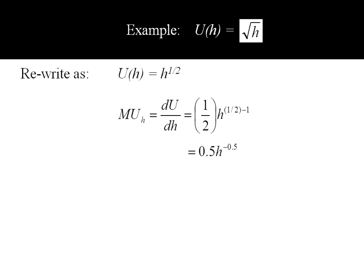If you don't like that negative exponent, you could rewrite it with h in the denominator. So 0.5 divided by h raised to the 0.5. And if you still don't like that decimal, you could change it into the square root of h. All three of those are equivalent ways of expressing the same thing.